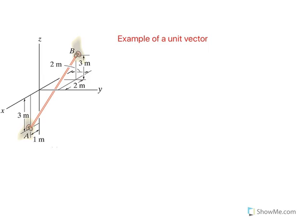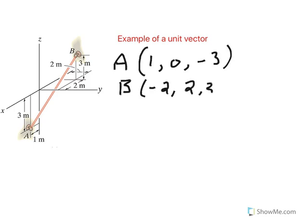So here I want to find this unit vector along line AB, so I'm going to first determine the coordinates of point A. Point A has the coordinates of 1, 0, and negative 3. And then similarly point B has coordinates of negative 2, that's the x-coordinate, 2 for y-coordinate, and 3.